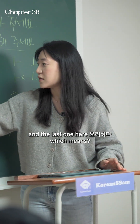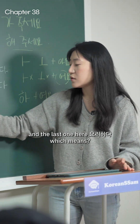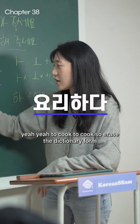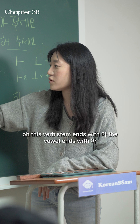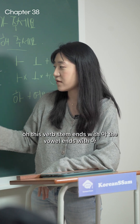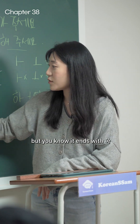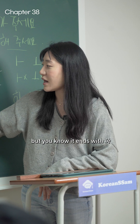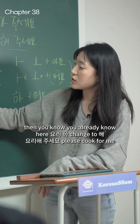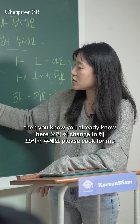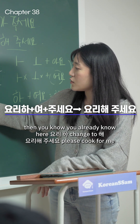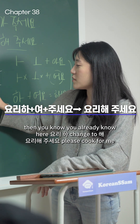The last example: 요리하다, which means to cook. Erase the dictionary form. This verb stem ends with 하. You already know this — 요리하 changes to 해. So you say 요리해 주세요, meaning please cook for me.